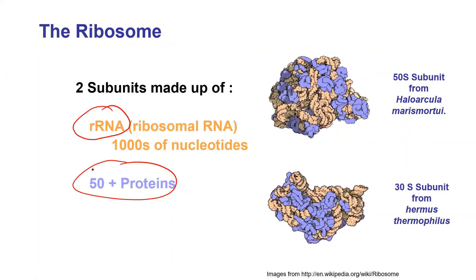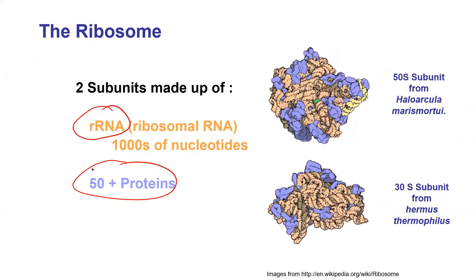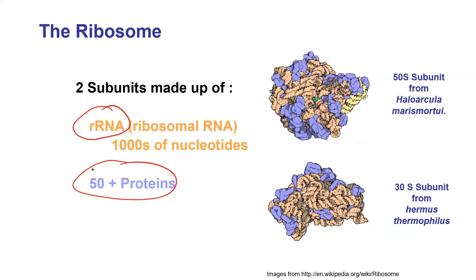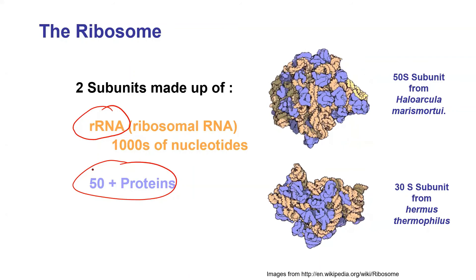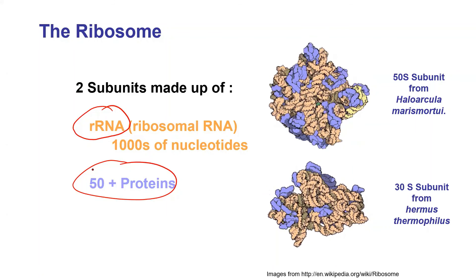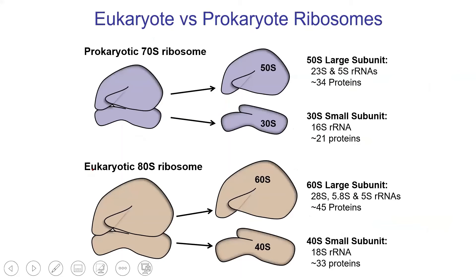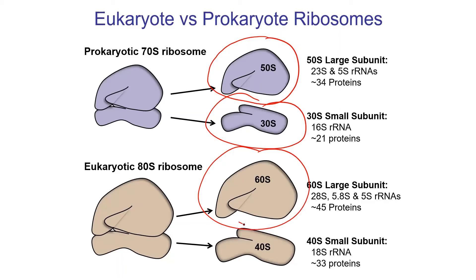Look at the top ribosomal subunit flipping around — there's a little green patch, which is actually where the active site is. Ribosomes are kind of like massive, very complex enzymes with active sites that make peptide bonds. Prokaryotic and eukaryotic ribosomes are different: 70S versus 80S, each with a large subunit and a small subunit. Those subunits assembled in the nucleolus don't actually come together until they find a piece of messenger RNA.